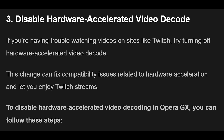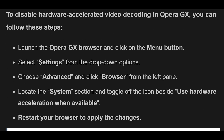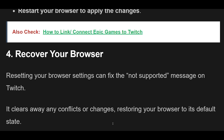3. Disable Hardware Accelerated Video Decode. If you're having trouble watching videos on sites like Twitch, try turning off Hardware Accelerated Video Decode. This change can fix compatibility issues related to hardware acceleration and let you enjoy Twitch streams. Launch the Opera GX browser and click on the menu button. Select Settings from the drop-down options. Choose Advanced and click Browser from the left pane. Locate the System section and toggle off the icon beside Use Hardware Acceleration when available. Restart your browser to apply the changes.